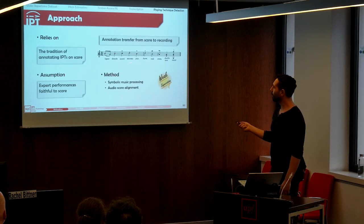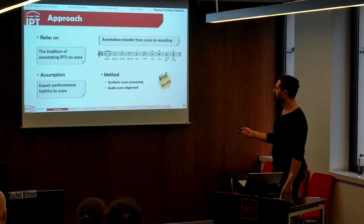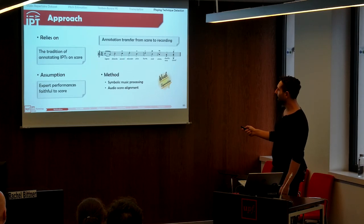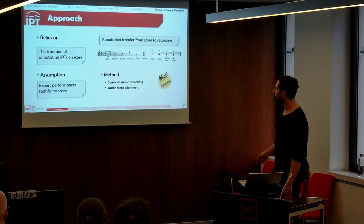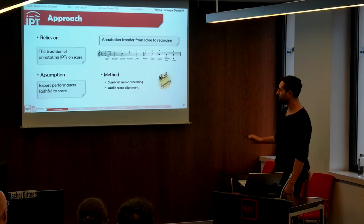Our method relies on annotation transfer from score to recordings for the techniques: five right-hand techniques — legato, detaché, accent, staccato, and pizzicato — and five left-hand techniques — harmonics, trills, ornaments, double stops, and chords. We do it in two steps: first symbolic music processing, then audio-score alignment for transferring the labels from scores to audio recordings.